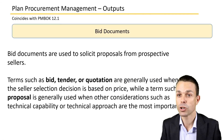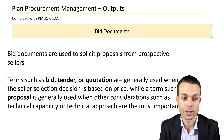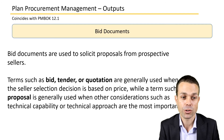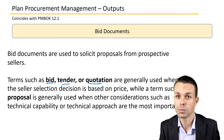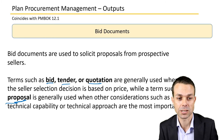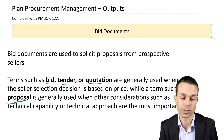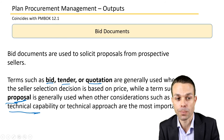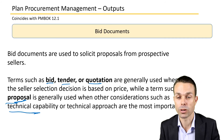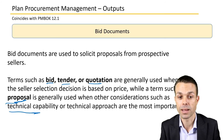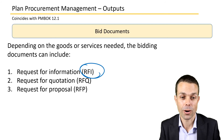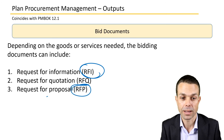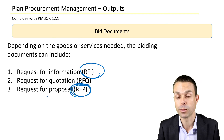Bid documents are used to solicit proposals from prospective sellers. Terms such as bid, tender, or quotation are generally used when the seller selection decision is based on price, while the term proposal is used when other considerations such as technical capability are primary. Bid documents include a request for information (RFI), a request for quotation (RFQ), or a request for proposal (RFP) — used when we're unsure if a seller can actually do the work and need a full proposal from them.